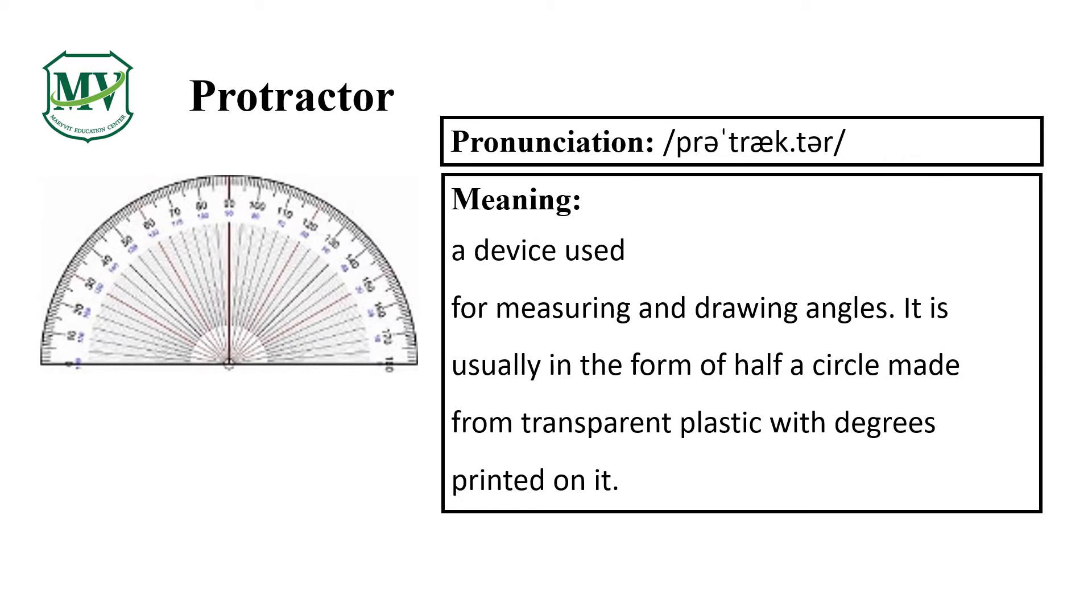Repeat after me. Protractor. Fantastic! Protractor means a device used for measuring and drawing angles. It is usually in the form of a half circle made from transparent plastic with degrees printed on it.